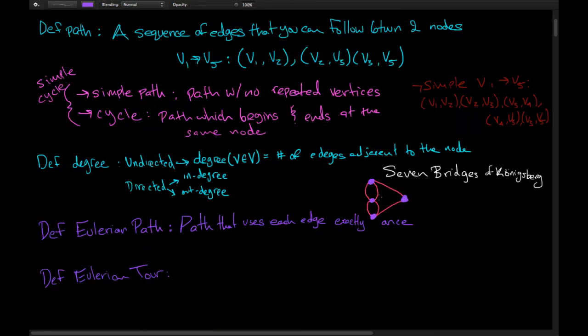We're going to define a few other things with the intent to solve a particular class of problem, similar to the one illustrated in this figure — the Seven Bridges of Königsberg. Imagine these nodes are four cities and these seven edges are seven bridges. What people wanted to know was whether there's a way to cross all seven bridges without ever crossing a single bridge twice. The mathematician Euler proved this could not be done, and he used — essentially invented — graph theory in doing so.